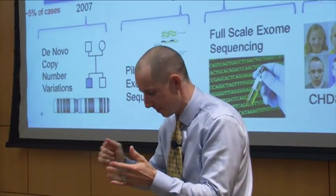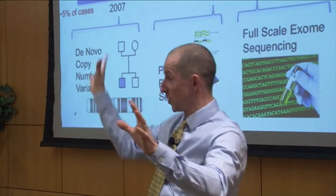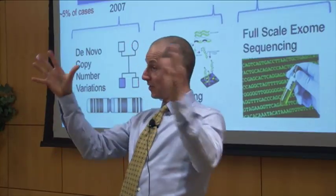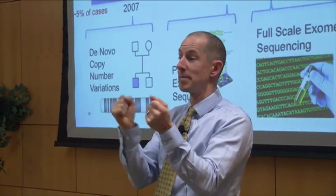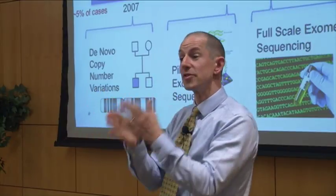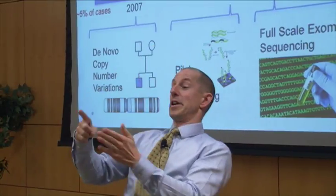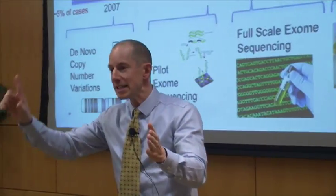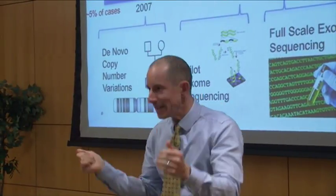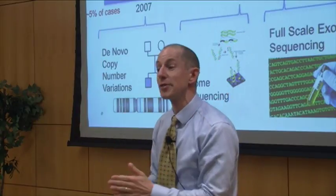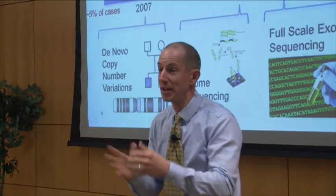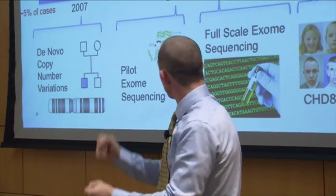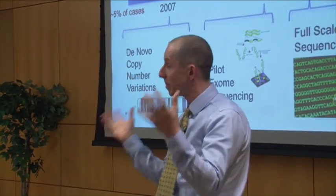Then Susan Folstein told me: this is great that you've been collecting multiplex families, but those account for about 20% of families with autism. The vast majority are simplex families. So she wanted me to find families where there's one child with autism, and ideally a second sibling who does not have autism — someone super flexible and social. So I got back in the car and drove all around New England again collecting simplex families.